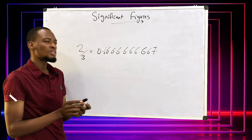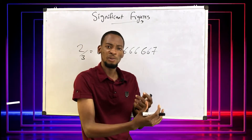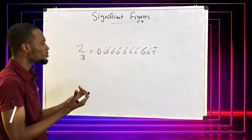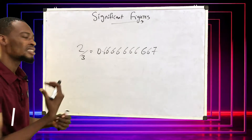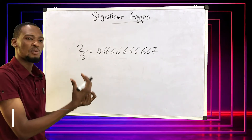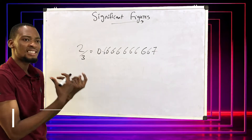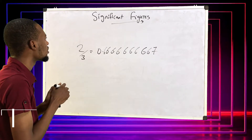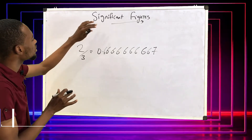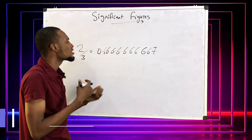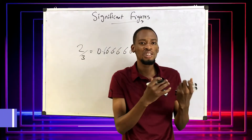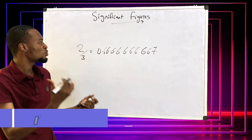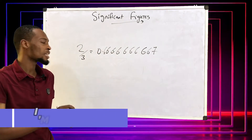Most times, we do not need all these values. We need to break values down to the significant figures we want, to the decimal places we want, so that things can move smoothly.